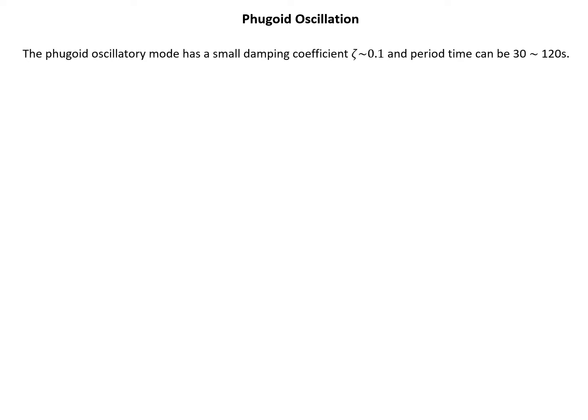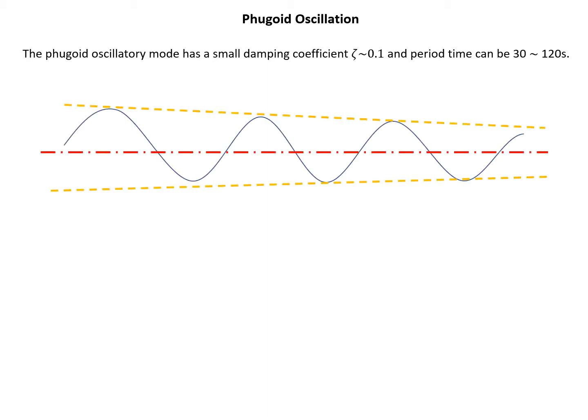For the phugoid oscillation, let's first look at some key concepts. The phugoid oscillatory mode has a small damping coefficient of about 0.1, which is much smaller compared to the short period pitching oscillation. The period time of the phugoid mode can be between 30 and 120 seconds — much longer than the SPPO, which typically completes within 10 seconds.